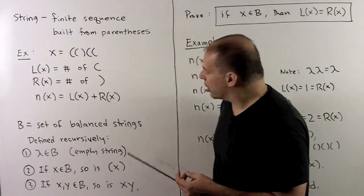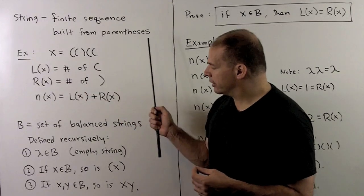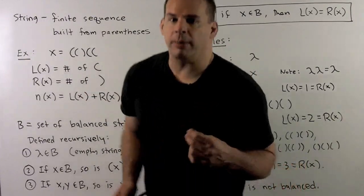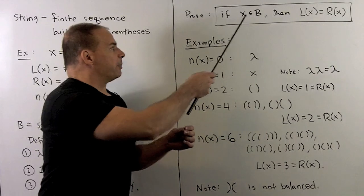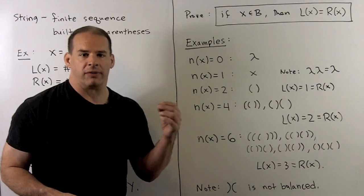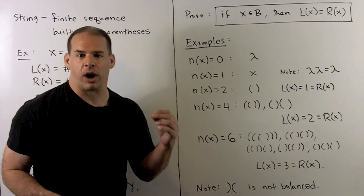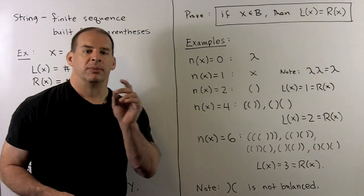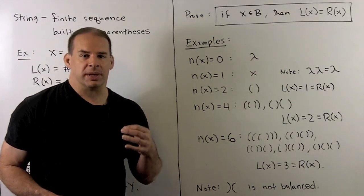Now, these rules are going to generate a subset of all strings. Our problem of interest: if x is a balanced string, I want to show that l(x) is equal to r(x) — the number of left parentheses in x equals the number of right parentheses in x. Before we get to the proof, let's look at some examples.